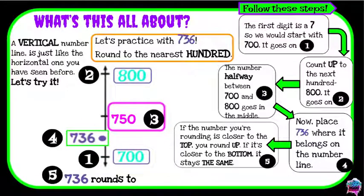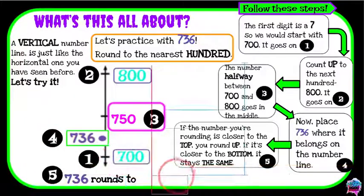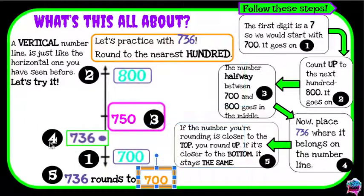Once I've placed my number on the number line, I need to round it. So I know that this is my halfway point, and anything below my halfway point is going to stay the same and anything above my halfway point is going to round up to the next hundred. So since 736 is below the halfway point of 750, it's going to stay at 700. So 736 rounds to 700. Now you try it.